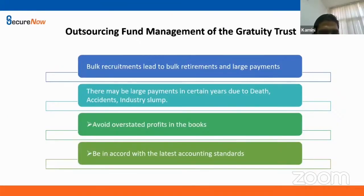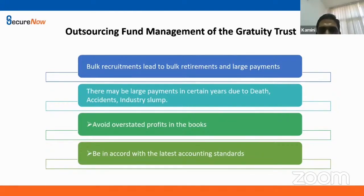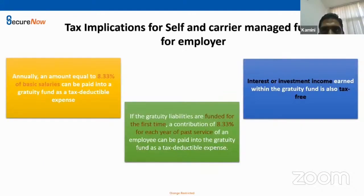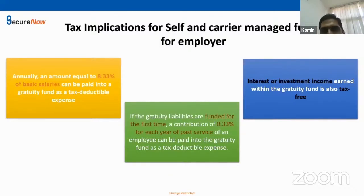Why should Gratuity be outsourced? There could be bulk resignations, bulk deaths, or a slowdown in the business, as a result of which there can be a huge requirement of Gratuity to be paid out, which will definitely hit the cash flow of any organization. So it is always advisable that the money is kept aside so that it doesn't hit your cash flow. Whatever amount is outsourced to an insurance company via creating that trust in a specific financial year is treated as an expense in books of accounts, as a result of which the corporate tax benefit is enjoyed by the company.